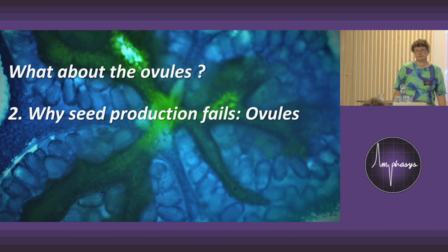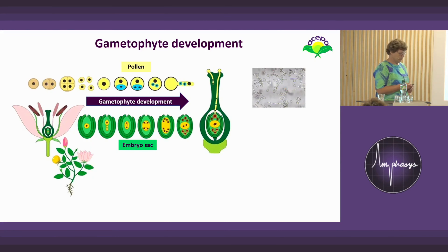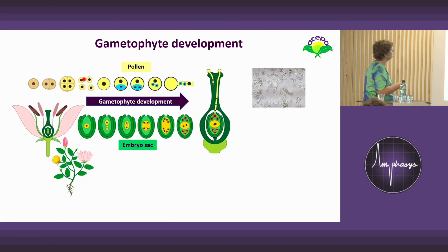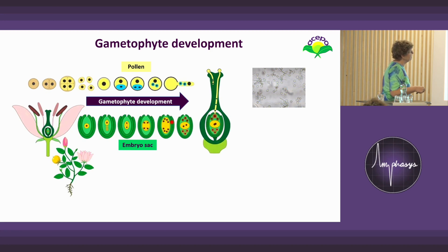If you compare pollen and ovule development, they go in parallel — sometimes ovule development is ahead of the pollen or the other way around. The difference is in cell division: for pollen all four cells go on to develop, whereas for the embryo sac just one cell starts to divide and forms the embryo sac, which is then fertilized.